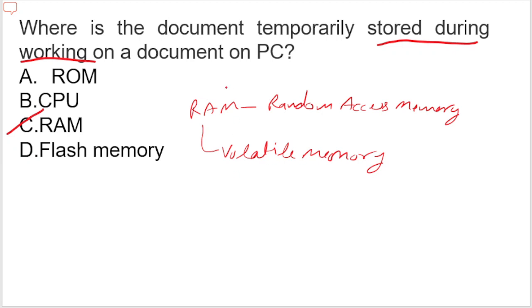These are important points. Sometimes they only ask the full form, or whether it is volatile or permanent memory. RAM is a volatile memory — that is important.